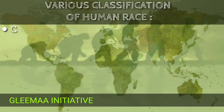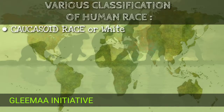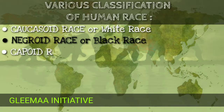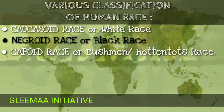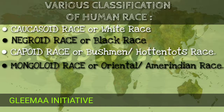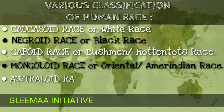These are: Caucasoid race or white race, Negroid race which we call black race, Capoid race or Bushman or Hottentot race, Mongoloid race or Oriental or Amerindian race, and lastly Australoid race.